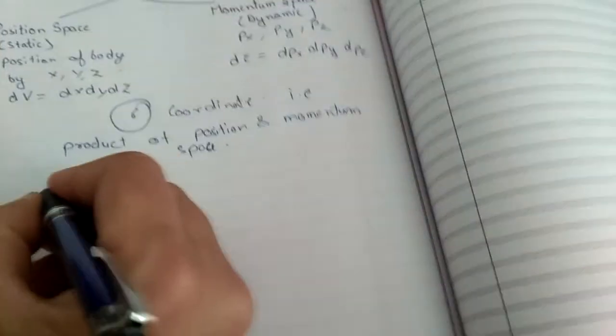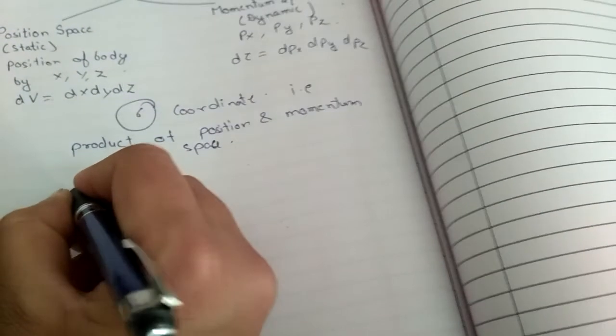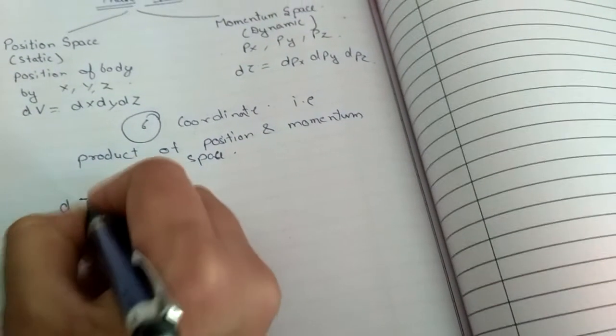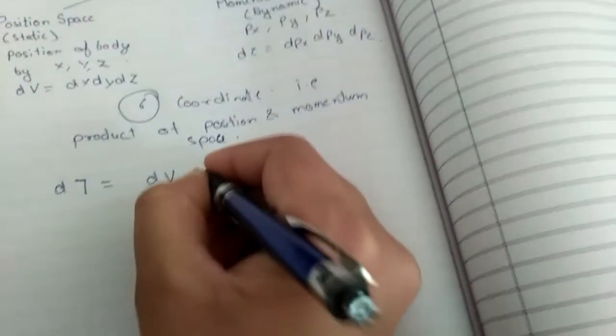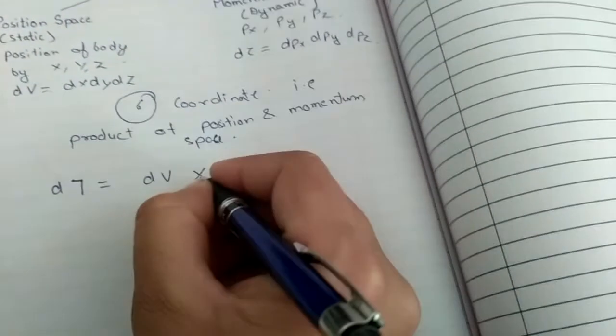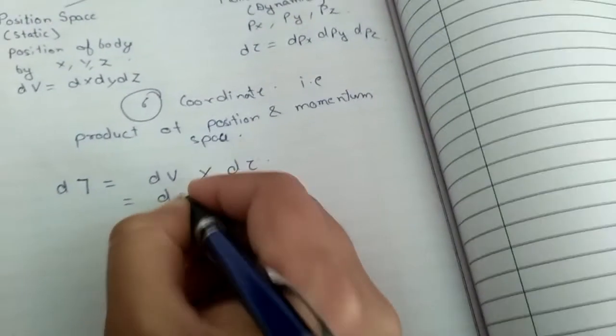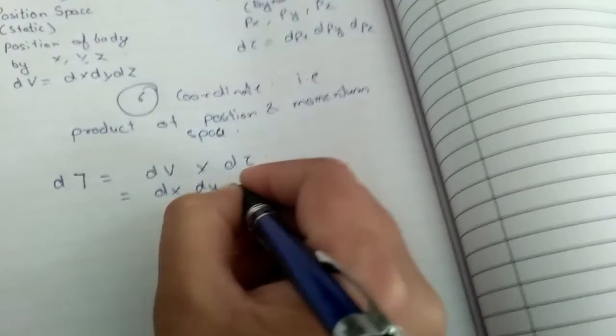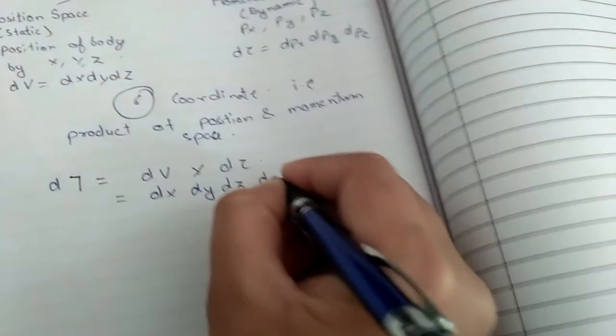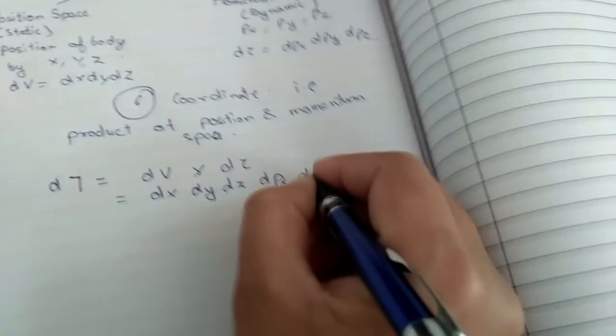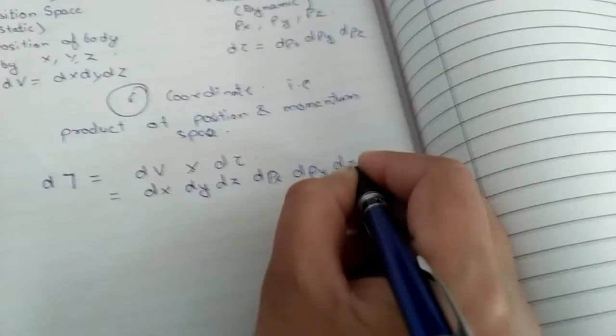So our final volume d tau is equal to dV multiply d small tau that is also equal to dx dy dz into dpx dpy dpz.